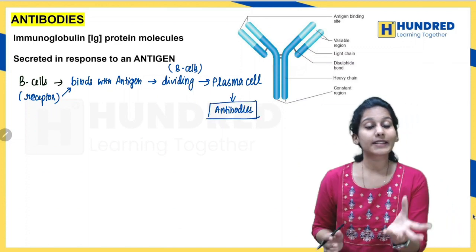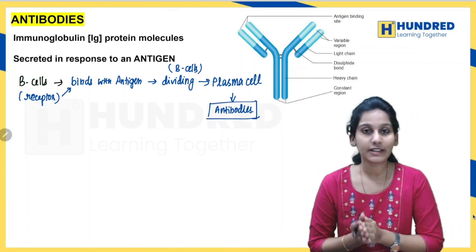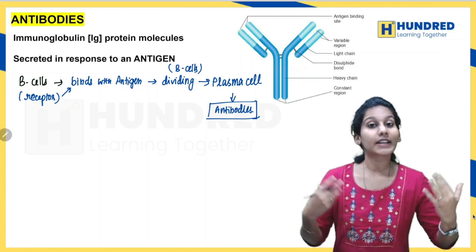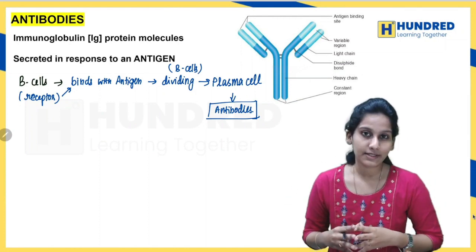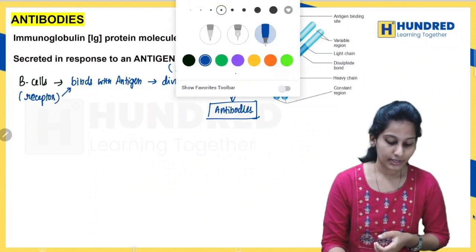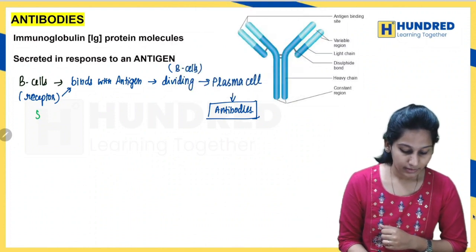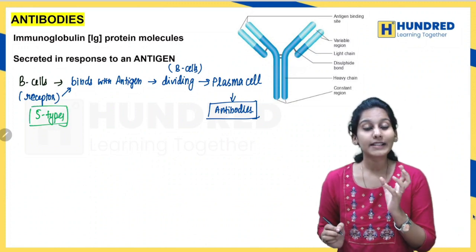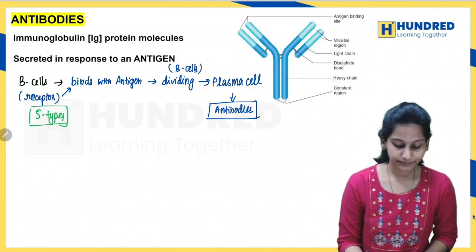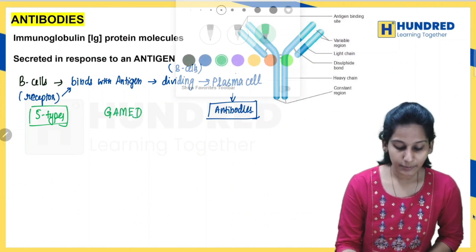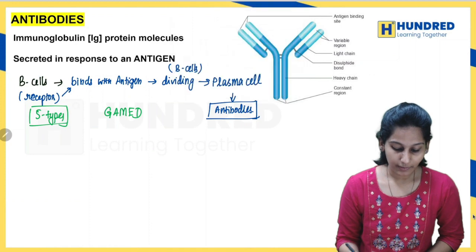In our body there are almost five different types of antibodies present. To remember these five types, there is a mnemonic — we call it GAMED. We will see each of the five different types of antibodies one by one.